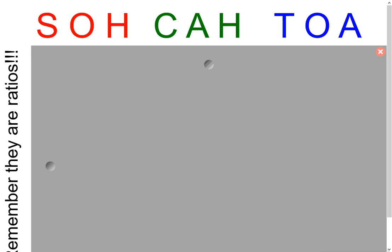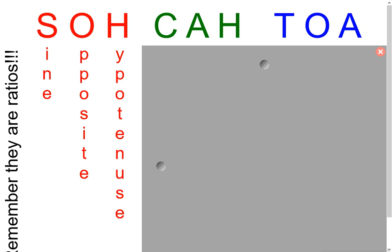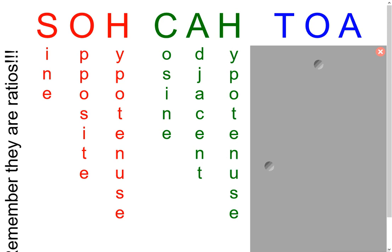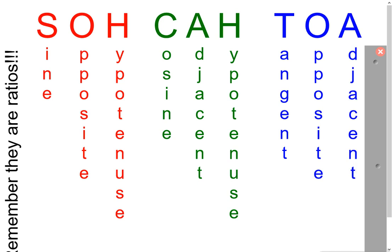Before we look at some examples, I just want to remind us of the trigonometric functions — sine, cosine, and tangent. My acronym SOH-CAH-TOA represents: sine is the opposite side over the hypotenuse, cosine is the adjacent side over the hypotenuse, and tangent is the opposite side over the adjacent side.